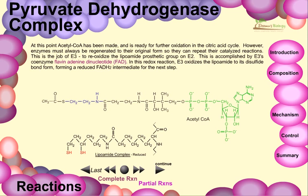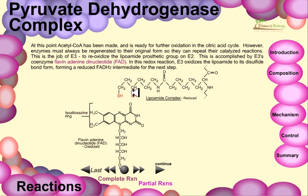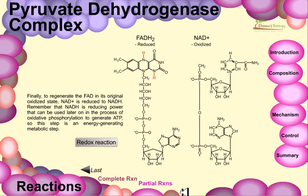The regeneration of the lipoamide prosthetic group on E2 is the job of E3, accomplished using its coenzyme flavin adenine dinucleotide, or FAD. In the redox reactions, E3 oxidizes the lipoamide back to its disulfide bond form, forming a reduced FADH2 intermediate. Finally, to regenerate FAD in its original oxidized form, NAD+ is reduced to NADH. NADH is reducing power that can be used later in oxidative phosphorylation to generate ATP, making this step an energy-generating metabolic step.